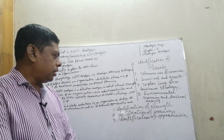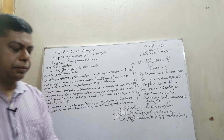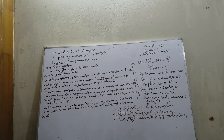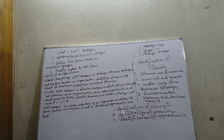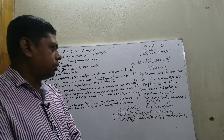Identification of weakness: weakness of the firm means limitations of the firm. Monitoring the internal environment helps to identify not only the strength but also the weakness of the firm. A firm may be strong in certain areas but may be weak in some other areas. For further growth and expansion, the weakness should be identified so as to correct them as soon as possible.